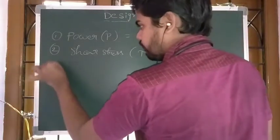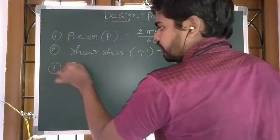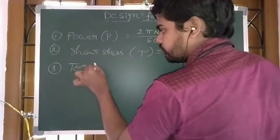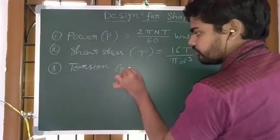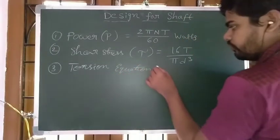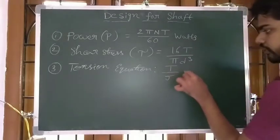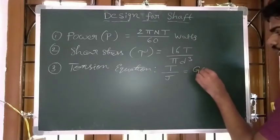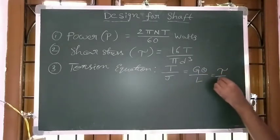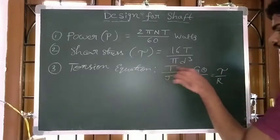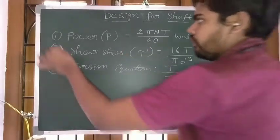The final formula is the torsion equation — a very popular equation. T by J is equal to G theta by L, which is equal to tau by R. Here T is torque and tau is shear stress.